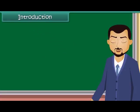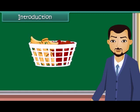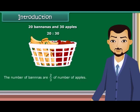Introduction: Ratio means comparing two quantities. A basket has two types of fruits — 20 bananas and 30 apples. The ratio of the number of bananas to the number of apples is equal to 20 is to 30. The number of bananas are 2 upon 3 of the number of apples. In terms of ratio, this is 2 is to 3, read as 2 is to 3.